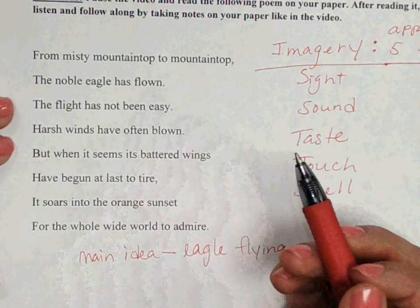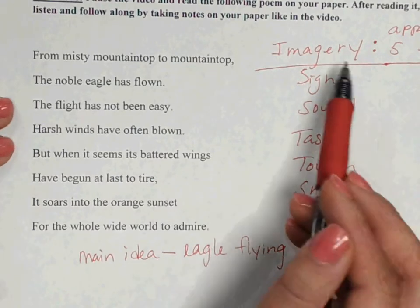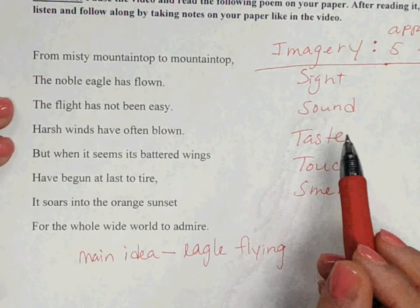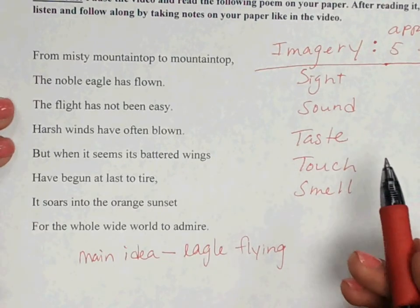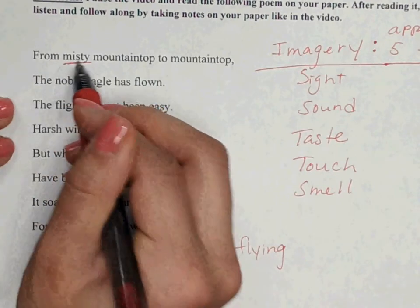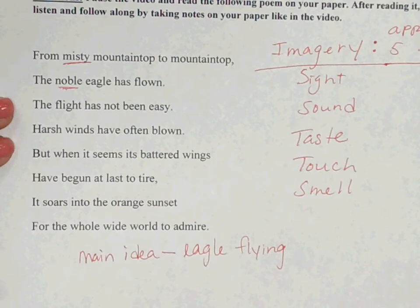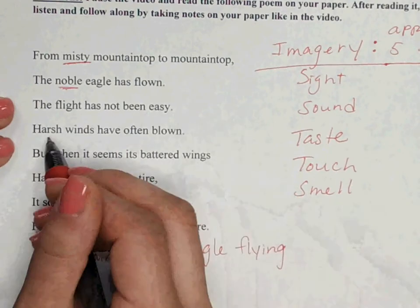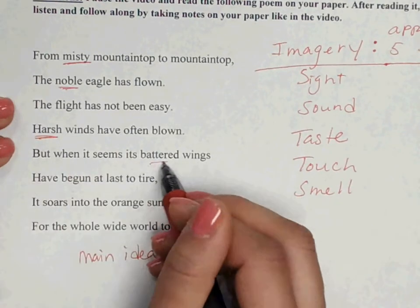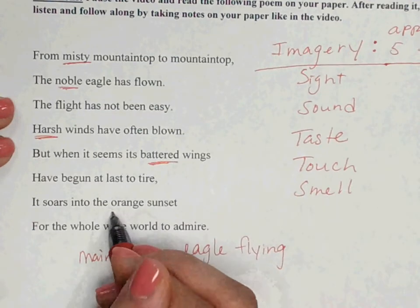Now let's look at our poem. Whenever you want to match things to our five senses, think of descriptive words. So we have: misty mountain top, noble eagle, the flight has not been easy, harsh winds, battered wings, and orange sunset.